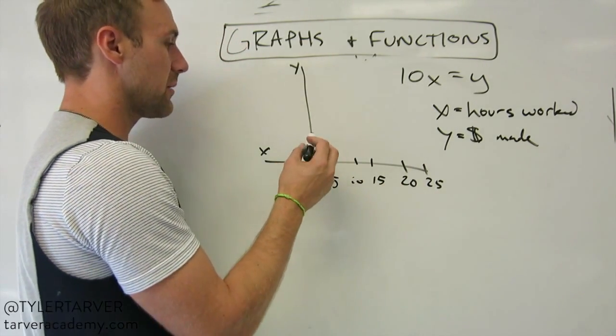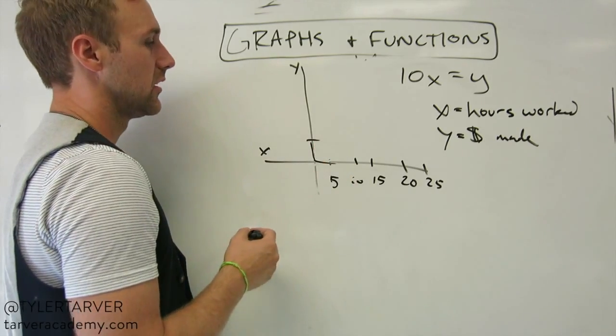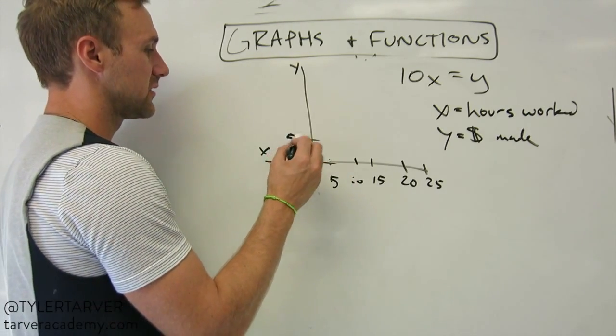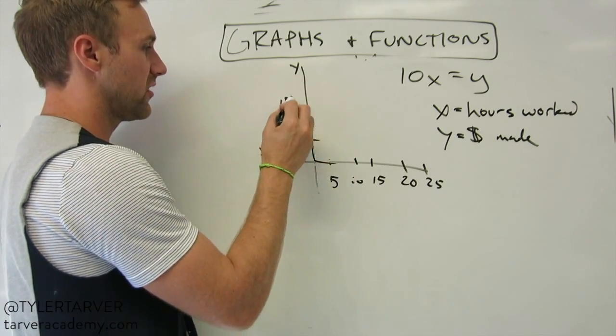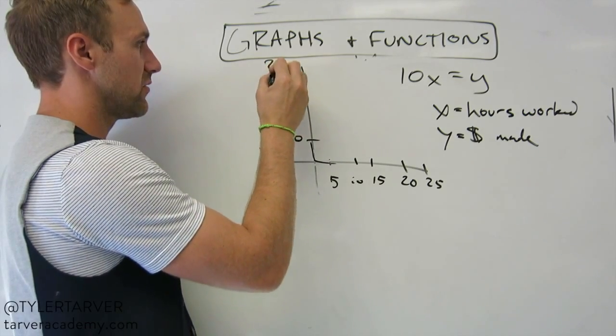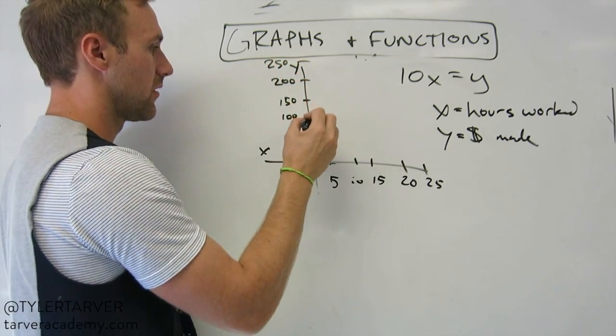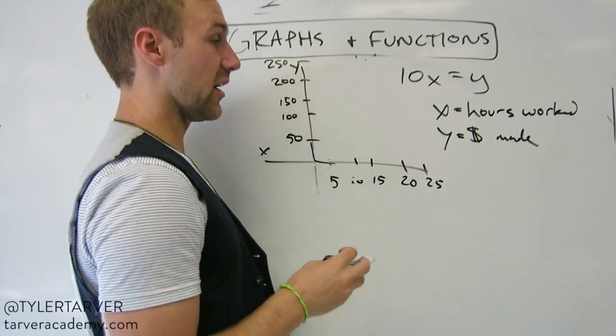So, for instance, we've got Y is money made. Let's do $50, $100, $150, $200, and then $250. Convenient numbers, I know.